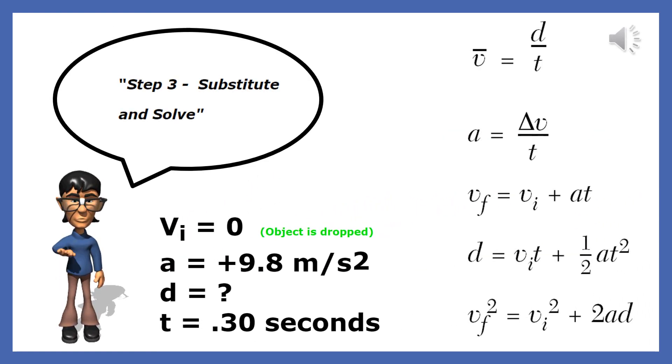Once we have all four variables, we slowly scan the reference table until we find an equation that has all three variables that we have and the one variable that we want. This is the fourth equation.